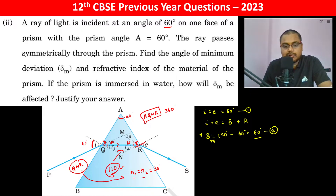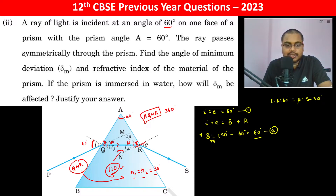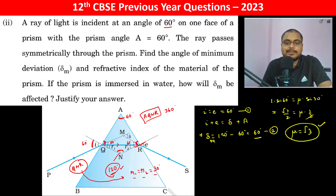R1 should be equal to R2 should be equal to 30 degrees. Now applying Snell's law: 1 × sin 60° = μ × sin 30°. Therefore μ becomes √3. So the refractive index of the material of the prism is √3.